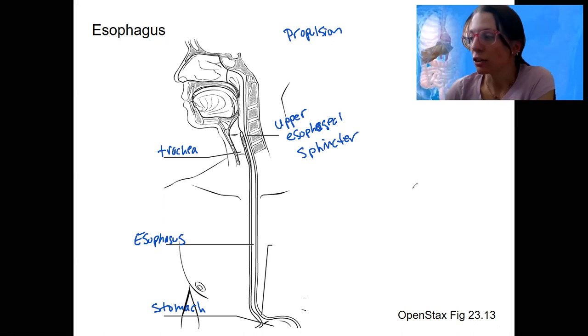A sphincter, remember, is a muscular valve that can open and close. And so when it contracts, it's going to close. When it relaxes, it opens. We can control things going in and out.